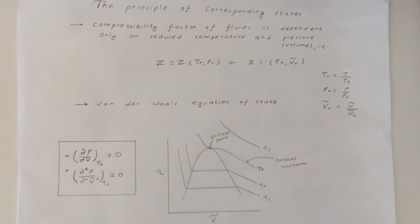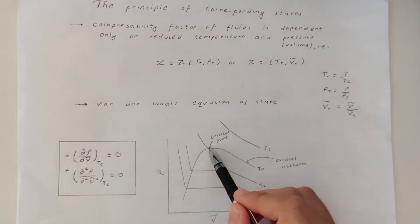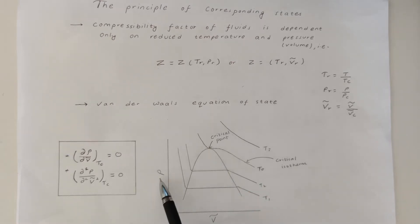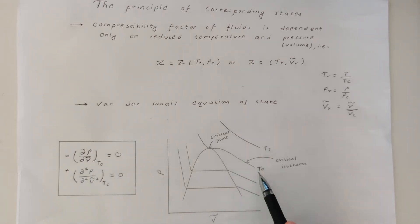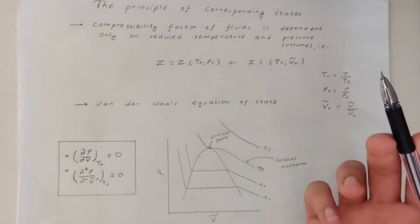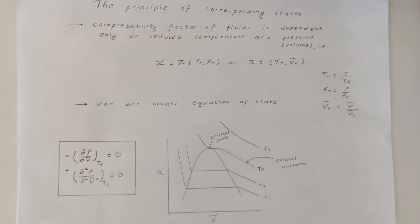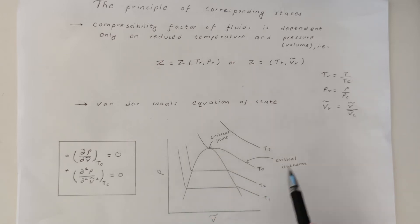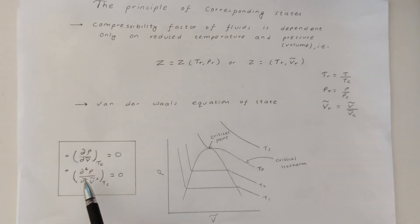The critical point has two interesting properties. First, it is the maximum point of the dome, so the first partial derivative of pressure with respect to molar volume at the critical isotherm is zero. Second, the critical point is an inflection point of the critical isotherm — there is a change in concavity — so the second partial derivative of pressure with respect to volume is also zero.